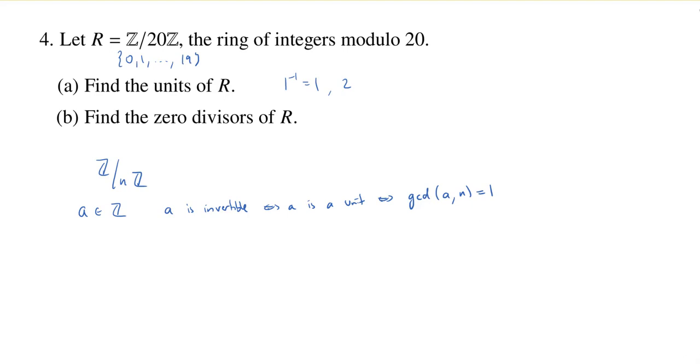So we'll say why this is true in just a second, but see how easy this is going to make part a. Once we know that we're only looking for integers, particularly ones between 0 and 19, whose greatest common divisor when put with the number 20 is 1, well, that's going to rule 2 out. Because the GCD of 2 and 20 is 2.